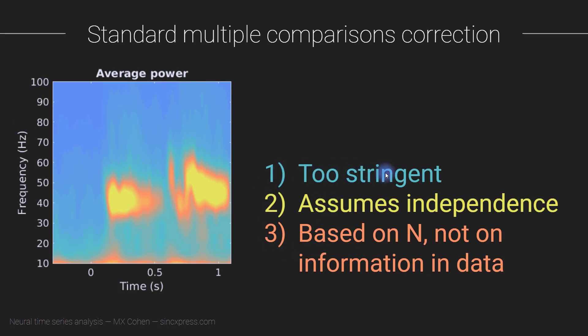The first issue is that the threshold ends up being too stringent. Applying Bonferroni appropriately, you might get a threshold of 0.05 divided by 640,000 — a ludicrously tiny number. Even real, true effects are unlikely to survive such a threshold. The only effect I'd be confident would survive would be the difference in brain activity between living and dead people.